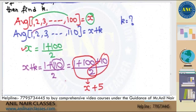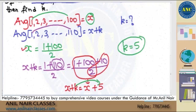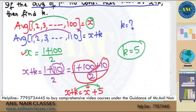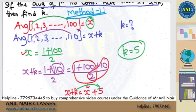So X plus K equals X plus 5, because 10 divided by 2 is 5. In place of K, you have 5. Therefore, K equals 5. This is Method 1, which uses the definition of averages: average equals first term plus last term divided by 2.